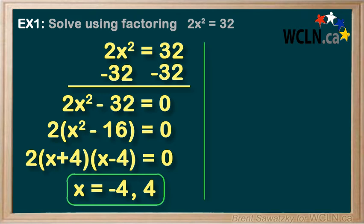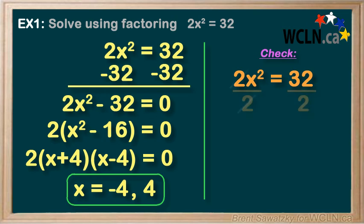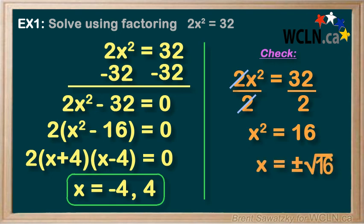And we can always use our isolating the variable to confirm our answer over here. Let's check. First we'll divide both sides by 2 and x squared equals 16. And then we'll square root both sides which leaves us with an x on the left and plus or minus 4 on the right. And this agrees perfectly with our new factoring method.